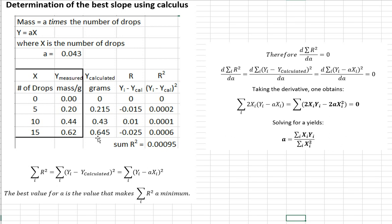So here are our data. Here's our y calculated. Here's the r value and the r squared. So r squared is really the sum of the differences squared between the measured value and the calculated value. And the calculated value is ax. So the best value for a is the one that makes the sum of the squares of the residuals a minimum.